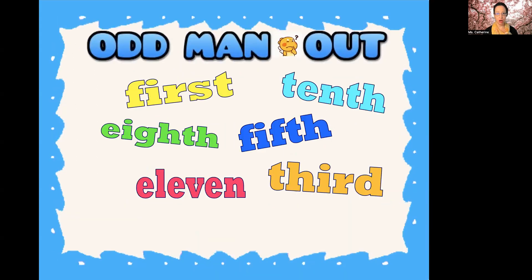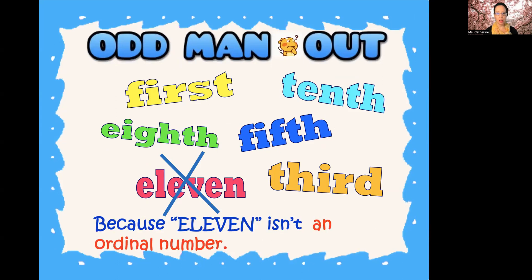Which one does not belong here, or is the odd man out? We have: first, eighth, 11, 10th, 5th, and third. Which one does not belong? The answer is 11. But why? Because 11 isn't an ordinal number. Ordinal numbers are first, second, third, fourth, fifth, and so on.